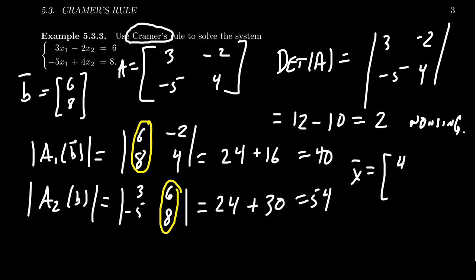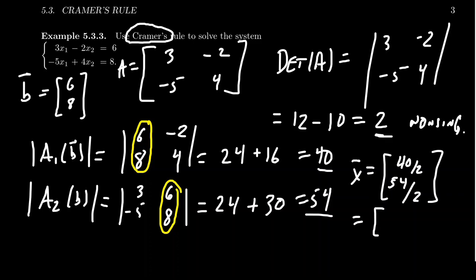The solution x equals det(A₁(b)) divided by det(A), which is 40 divided by 2, and for the second entry, det(A₂(b)) divided by det(A), which is 54 divided by 2. So x₁ = 20 and x₂ = 27. This gives us the unique solution to the system of equations.